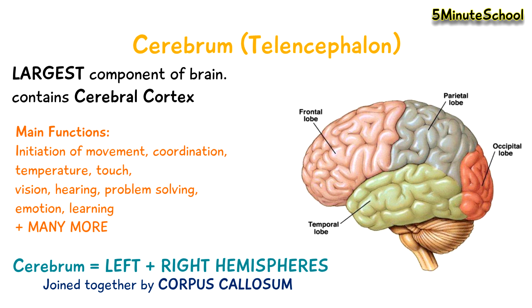The cerebral cortex is further classified into four lobes: the frontal lobe, parietal lobe, temporal lobe, and the occipital lobe. More videos on the brain will be coming, breaking down each of these structures in detail, so make sure you subscribe and keep a lookout for those videos.